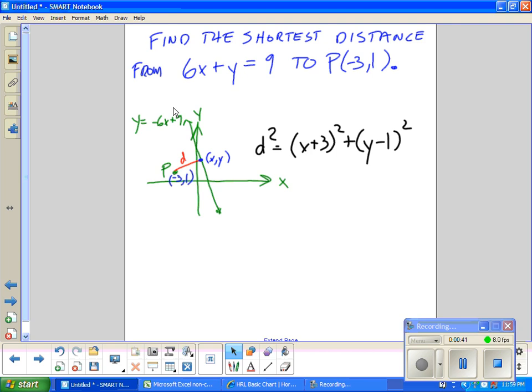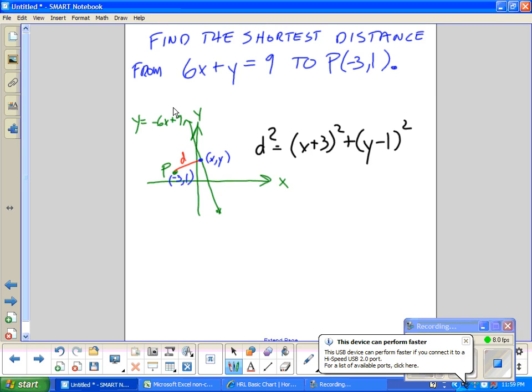Again, not worried about time. We're going to optimize and minimize the distance. I need to replace y. Well, from the graph of the line, I knew y was equal to -6x + 9. So I will put that in here at this point now.